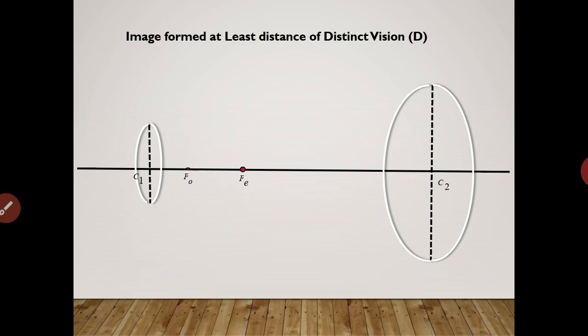The first lens is called the objective — the one which lies near the object — hence its focal length is marked as fo. The second lens on the right-hand side is the eyepiece; its focal length is marked as fe. Let's place the object AB in front of the objective lens.